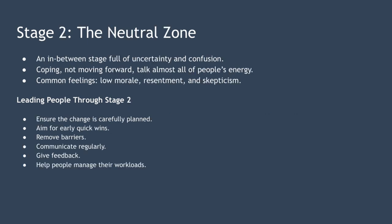Stage two: the neutral zone. In this stage, people have accepted that the old way has ended but find themselves unable to move forward — they are entering the neutral zone, an in-between stage full of uncertainty and confusion. This in-between stage is so full of uncertainty and confusion that simply coping takes almost all of people's effort.